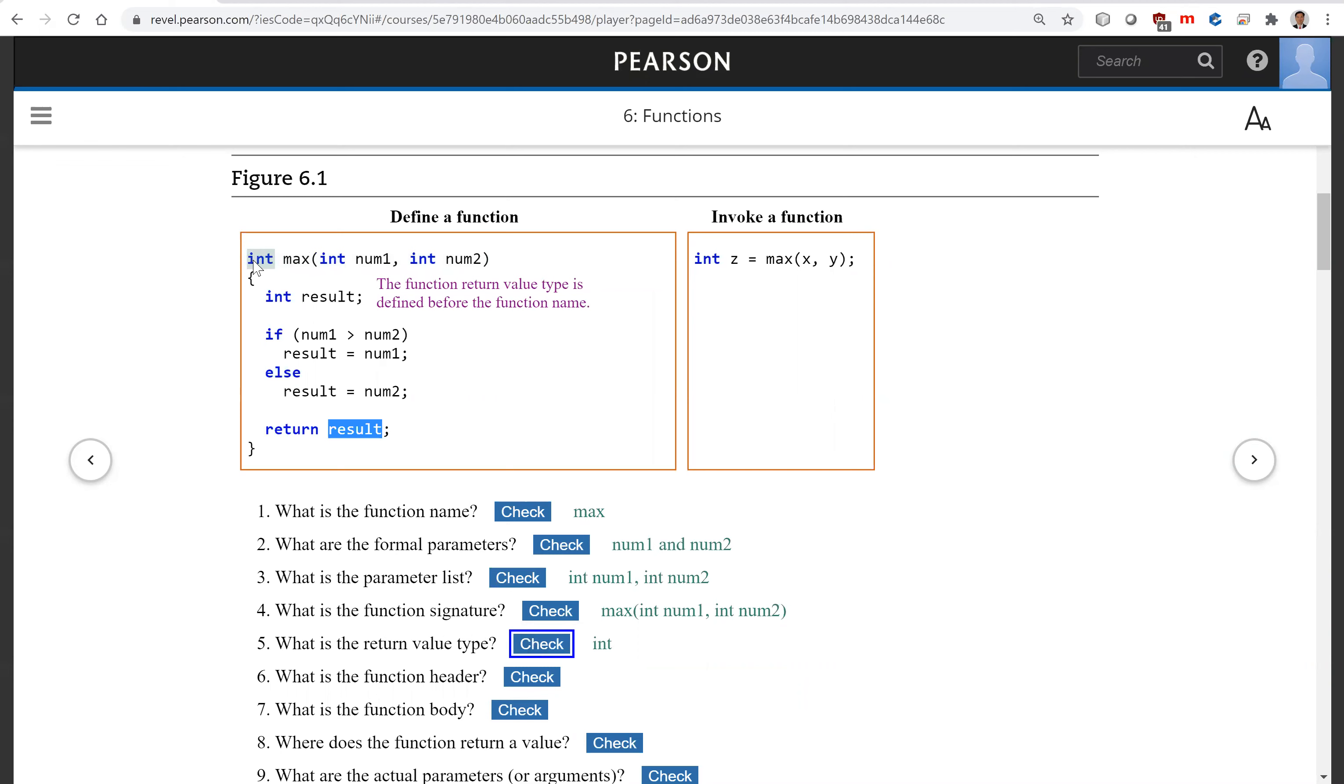Function name, including the parameter list, together is called the function signature. And this is the return type. Function return value type is defined. This, the whole thing on the first line here is called the function header. And this is the function body. And this is the return from the function.